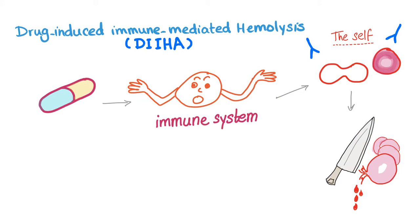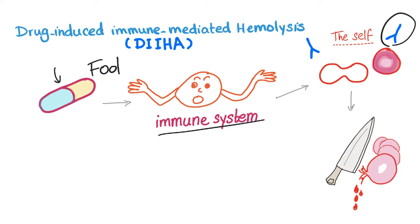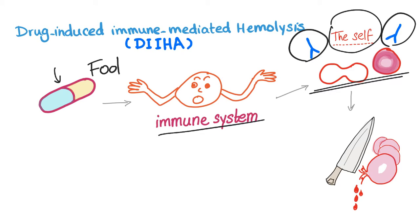So what's the story? You take a drug and this drug will fool your immune system. Now the immune system is confused and starts developing antibodies against the red blood cells — your own red blood cells, against the self. And hemolysis will occur, which is never a good idea.